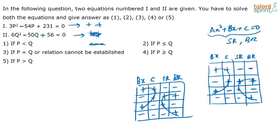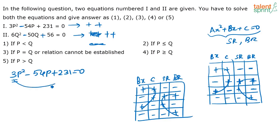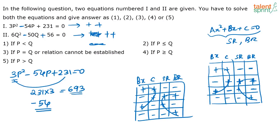Now let's solve: 3p² - 54p + 231 = 0. Whenever the coefficient a is greater than 1, multiply a and c. Here a is 3 and c is 231, so 231 × 3 = 693. Now find two numbers such that their sum equals -54 and their product equals 693.